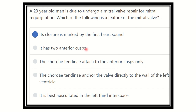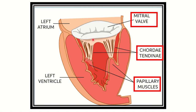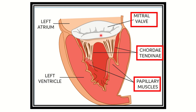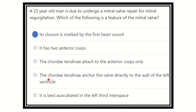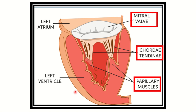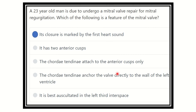So the option 'it has two anterior cusps' is incorrect — it has one anterior and one posterior cusp. The option 'chordae tendineae attach to the anterior cusp only' is also incorrect, as they attach to the posterior cusp as well. The option 'chordae tendineae anchor the valve directly to the wall of the left ventricle' is not true, because they first attach to the papillary muscles, then to the ventricular wall.